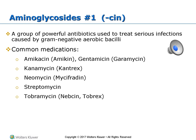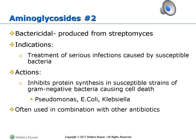Aminoglycosides are a group of powerful antibiotics used to treat serious infections caused by gram-negative aerobic bacteria. Common ones we see today are gentamicin, streptomycin, and tobramycin. When giving aminoglycosides like gentamicin, they inhibit protein synthesis of gram-negative bacteria, which leads to cell death. These are very potent antibiotics with serious toxicities, and are often used in combination with other antibiotics.